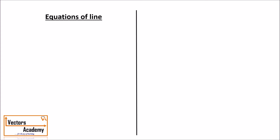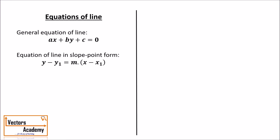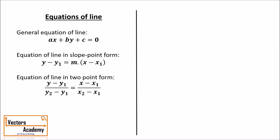The general equation of a line is represented by ax + by + c = 0. The equation of a line in slope-point form is y − y₁ = m(x − x₁). In two-point form it is (y − y₁)/(y₂ − y₁) = (x − x₁)/(x₂ − x₁), where (x₁, y₁) and (x₂, y₂) are the two given points. In slope-intercept form it is y = mx + c, where m is the slope and c is the y-intercept.